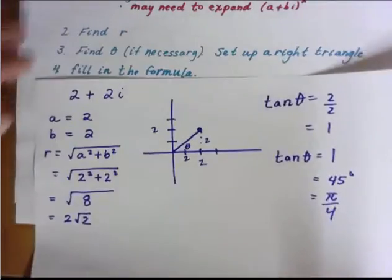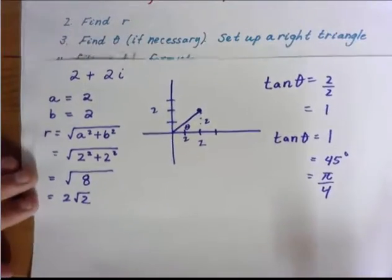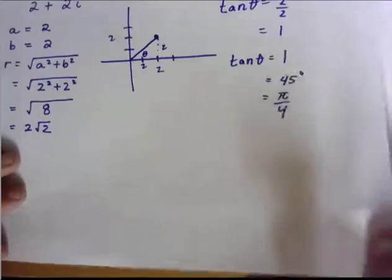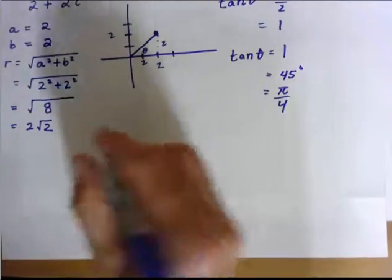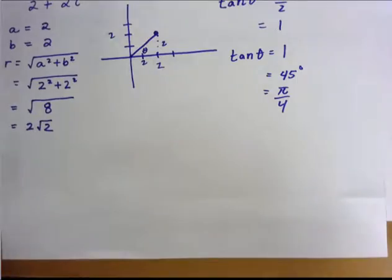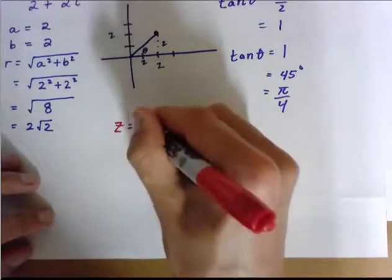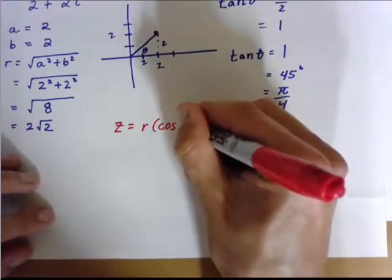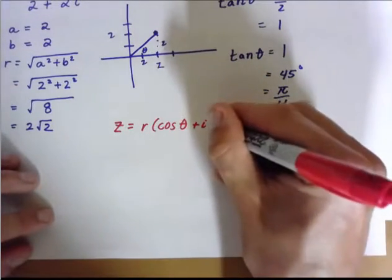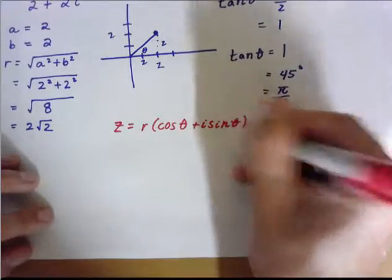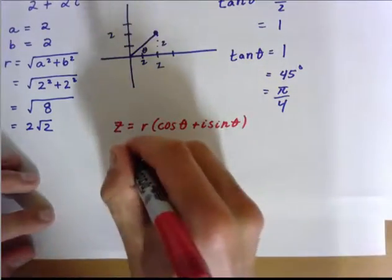So now we have theta. Now we fill in the formula. Our formula, let's go ahead and rewrite this. Z is equal to r times cosine of theta plus i sine of theta. There we go. Now we substitute.